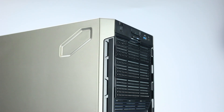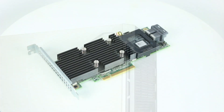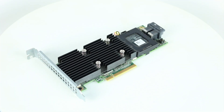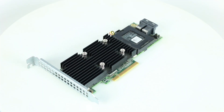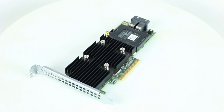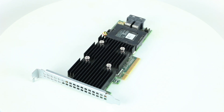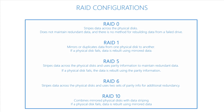RAID stands for Redundant Array of Independent Disks. It is a way of storing the same data in different places on multiple hard drives to protect your data in case of a drive failure. There are different RAID levels, however, and each has its own strengths and weaknesses.